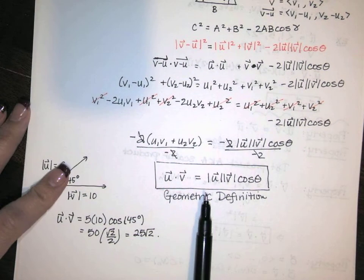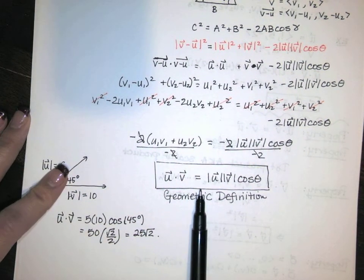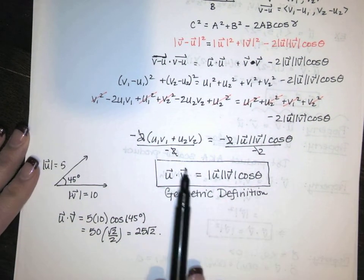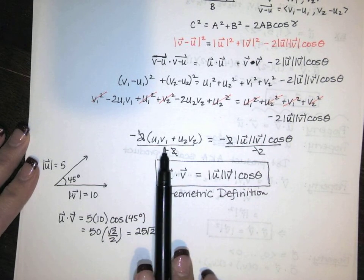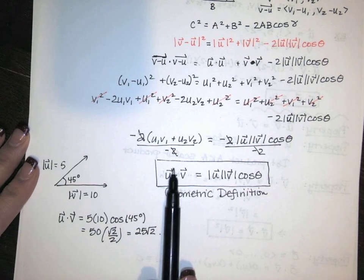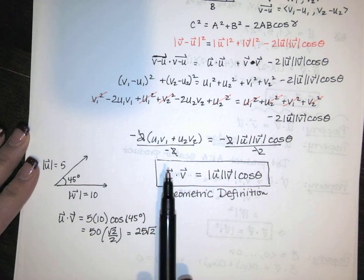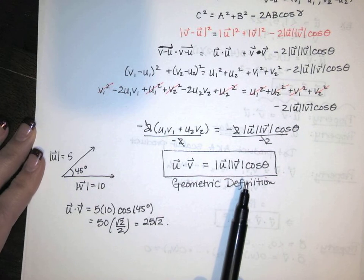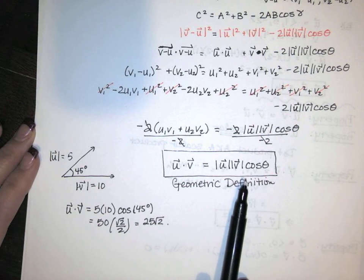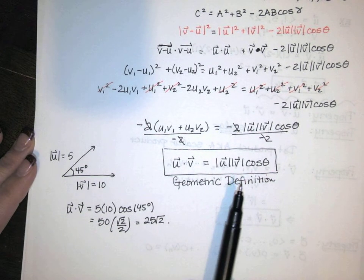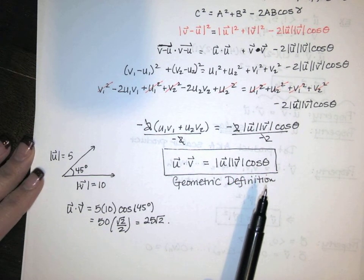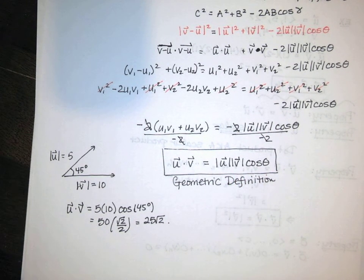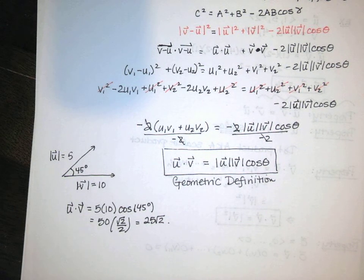The dot product has both an algebraic definition and a geometric definition. If you have component form, use the algebraic one; if you have geometric information, use the geometric one. What's powerful is that the simple arithmetic of the algebraic definition actually encodes the lengths and angle relationship — and that will allow us to apply dot product in many ways to solve problems.